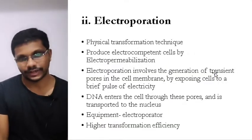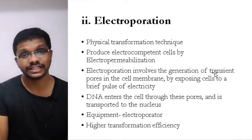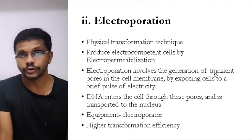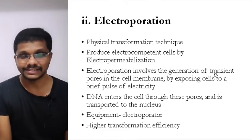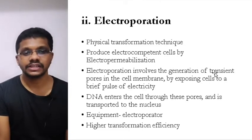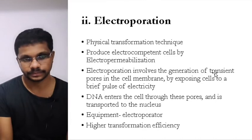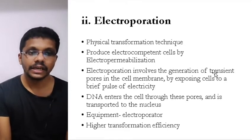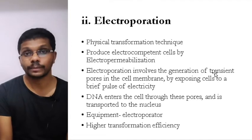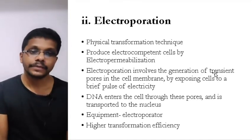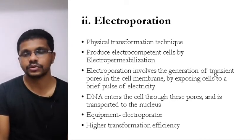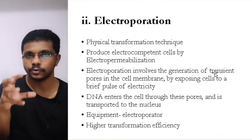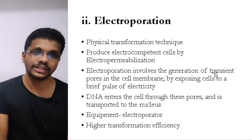The second method is electroporation — not electrophoresis, but electroporation. We use electricity to create pores in the cell. In chemical transformation we use calcium chloride along with heat shock to create pores; in electroporation we use electric charge to make the pores. It is a physical method of gene transfer that produces electrocompetent cells — cells made competent by electricity. The technique is also called electropermeabilization, as we are increasing the permeability of cells using electricity. When a very high voltage is applied for a very short time, transient pores form in the membrane through which DNA can enter.